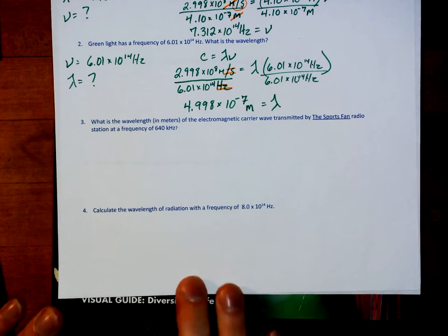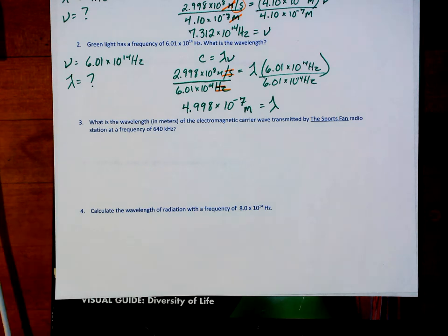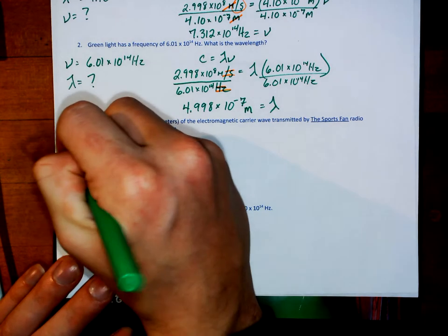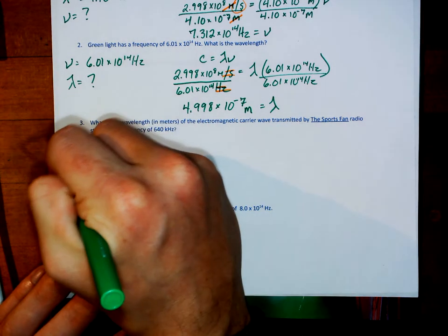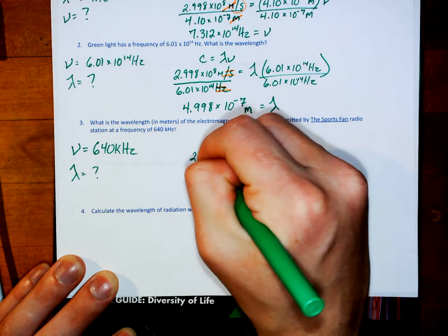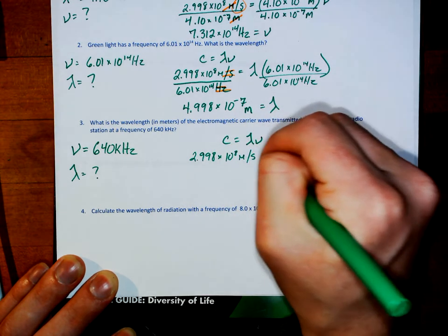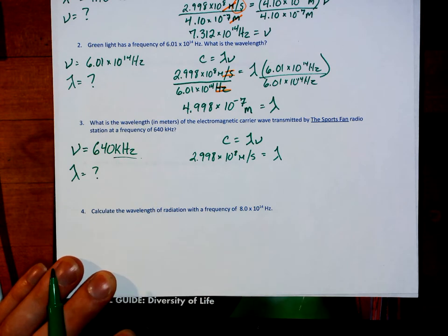In number 3: what is the wavelength in meters of the electromagnetic carrier wave transmitted by the sports fan radio station with a frequency of 640 kilohertz? All electromagnetic waves follow these rules, not just light waves. I am given a frequency of 640 kilohertz and I am looking for a wavelength, so the equation is C equals lambda nu. But I've got an issue here — this is in kilohertz, not hertz, so I'm going to need to convert that.